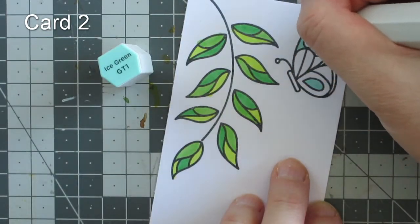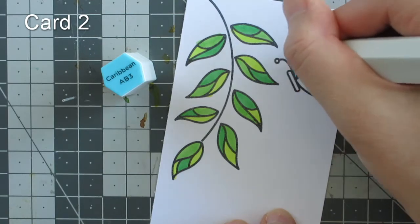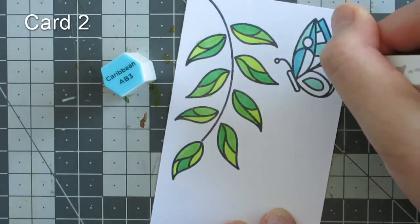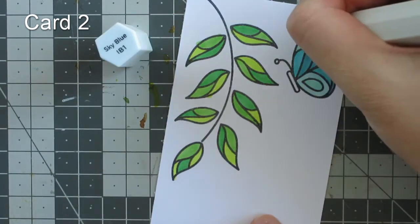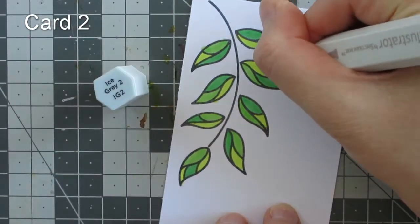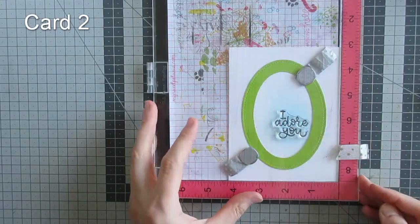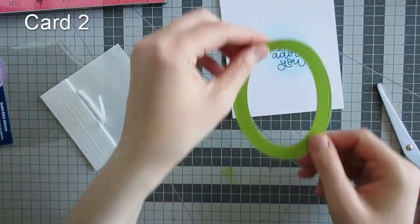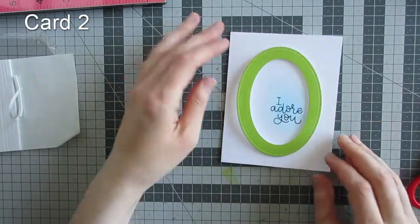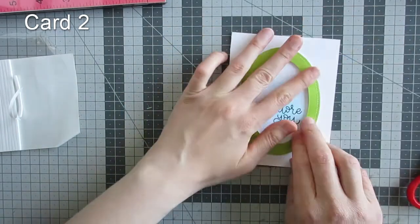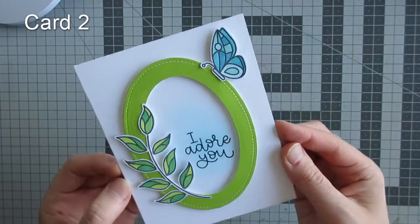I'm using a variety of blues for the butterfly and fussy cut those out. I'm adding a sentiment from the stamp set into my oval, then I'm popping up the frame on foam tape and attaching my leaves and butterfly with foam tape. It would have been easier if I'd stuck those on before adhering the frame down.